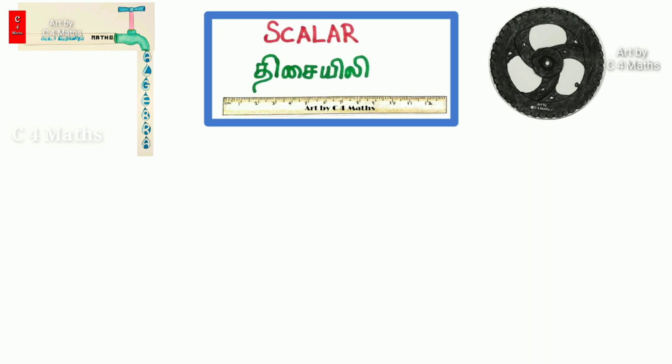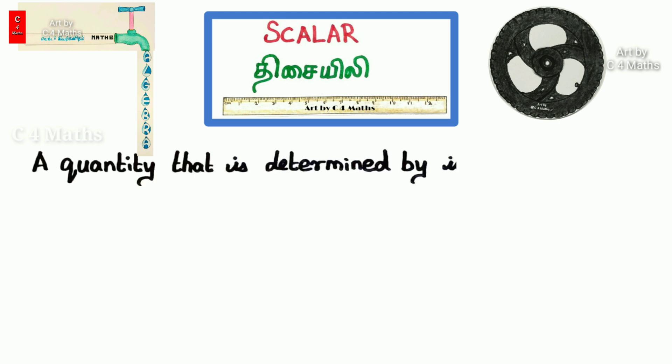Scalar: A quantity that is determined by its magnitude alone is called a scalar quantity. The magnitude refers to a numerical value.